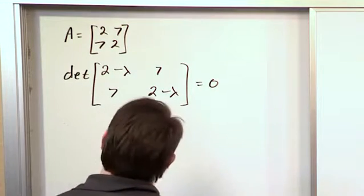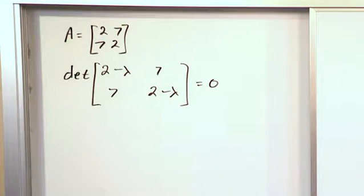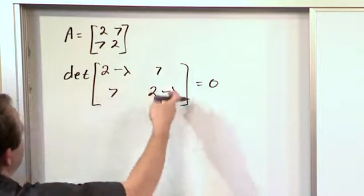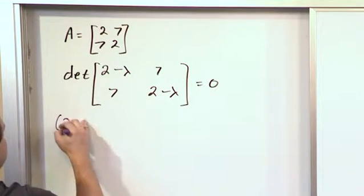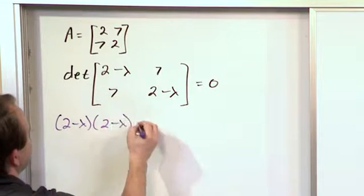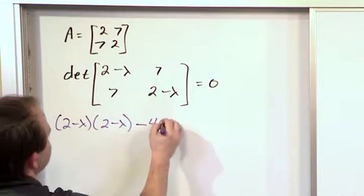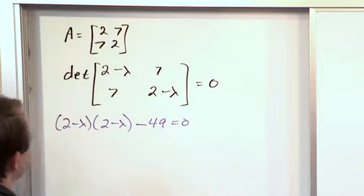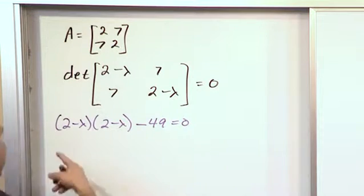So even if you don't understand the derivation or if you don't care, this is what you do. Since it's 2 by 2 we go like this: 2 minus lambda times 2 minus lambda minus 49 is equal to 0 because 7 times 7 is 49 and then we expand this.